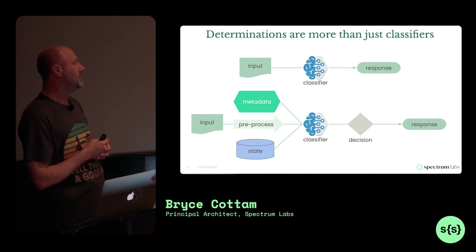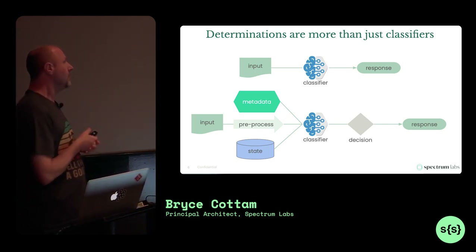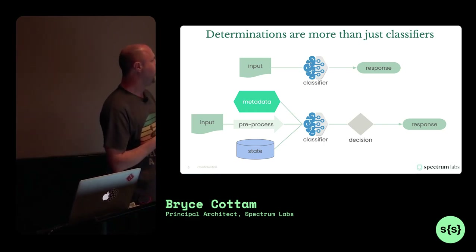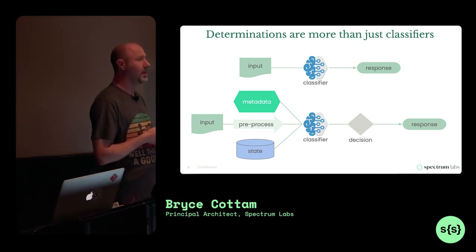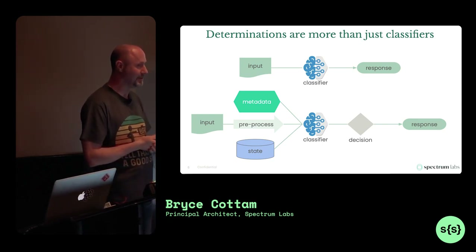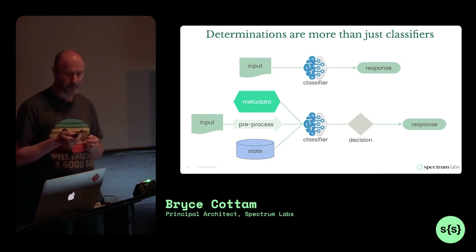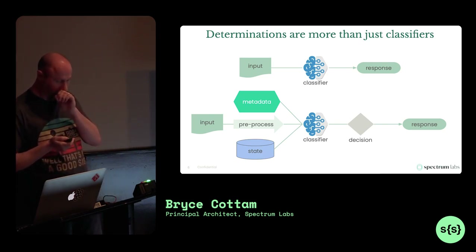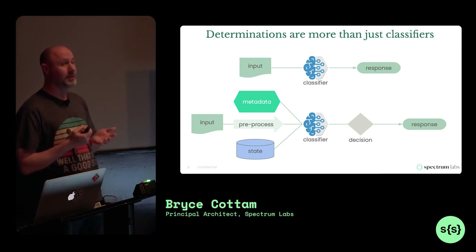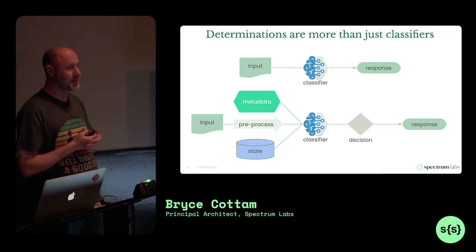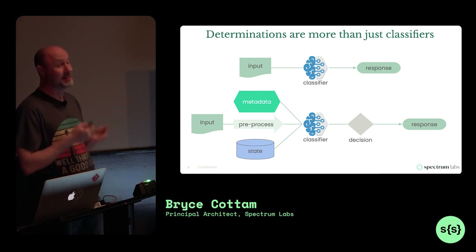Similarly, our clients make decisions based on our inferencing — our inferencing isn't the end-all be-all. I've spoken with data scientists who said, 'I created a Python script that calls model.predict and handed it to engineering, and they weren't happy with it.' As a data scientist, that makes sense — that's how you invoke classifiers. But from an engineering perspective, that signature doesn't tell you what you need.